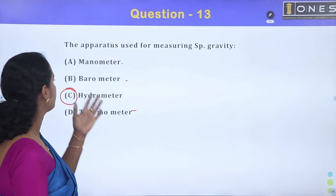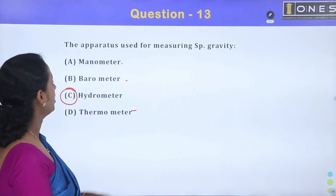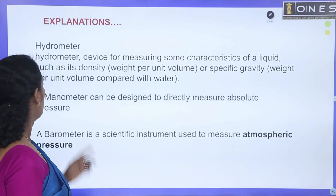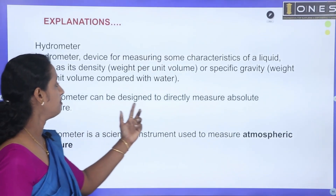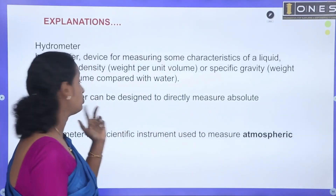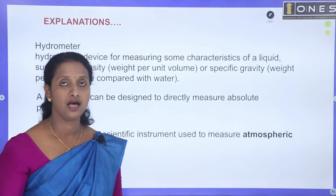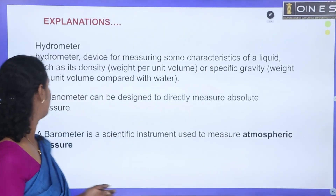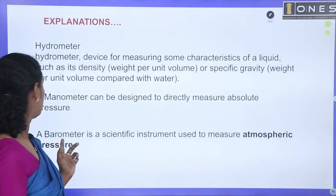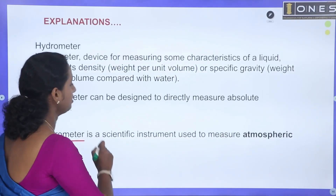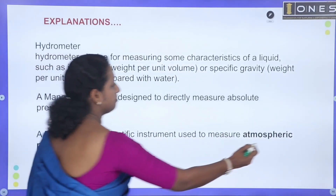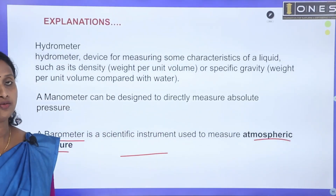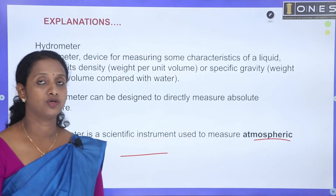What about manometer and barometer? A manometer can be designed to directly measure absolute pressure — it is a pressure-measuring instrument. A barometer measures atmospheric pressure.